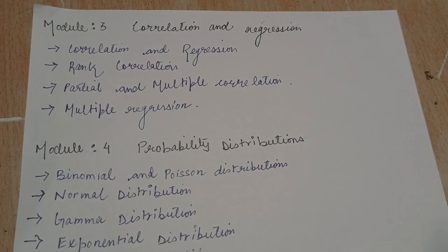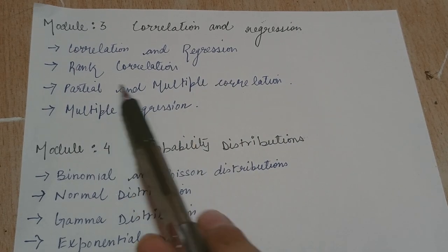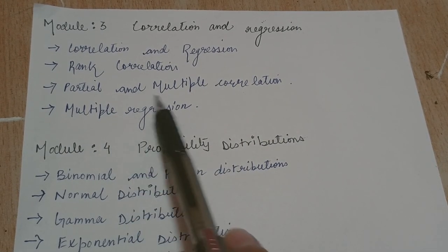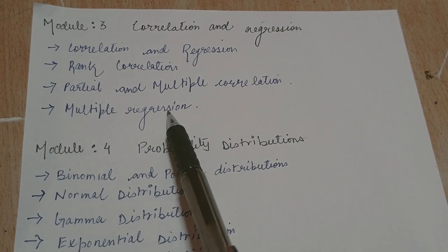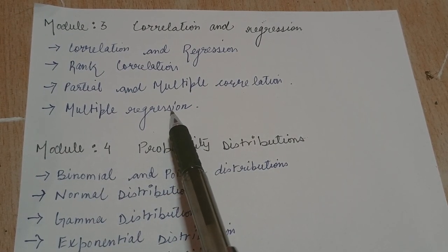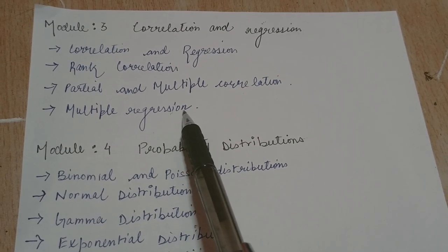Then comes module 3, correlation and regression. Correlation and regression is the first topic. Then rank correlation, then partial and multiple correlation. These topics are very simple. You just need to understand a bit and then you can apply the formula and solve the questions very easily.